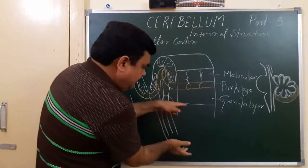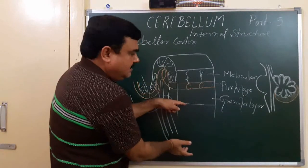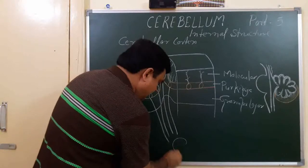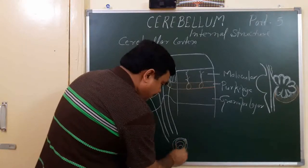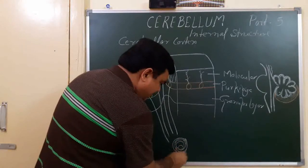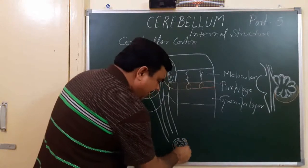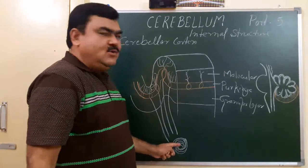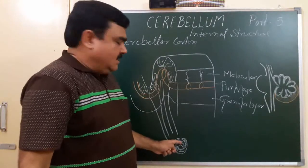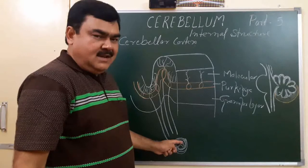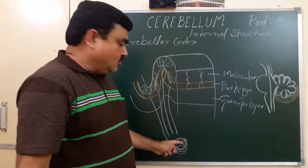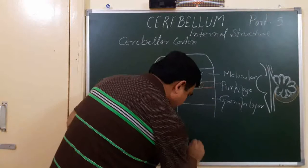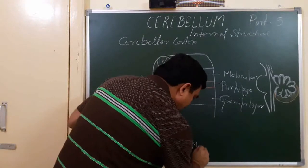Below this there is white matter, and here nuclei are present in the white matter. It may be any nucleus — dentate, emboliform, globose, or fastigial. So these are the cerebellar nuclei.